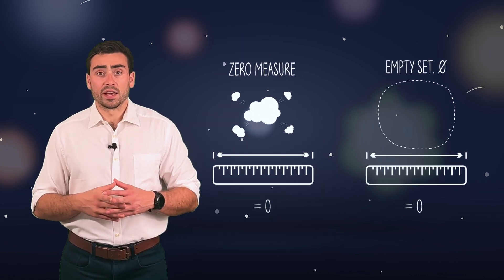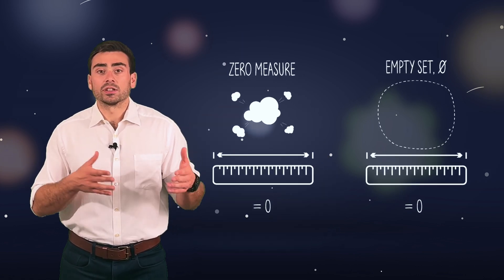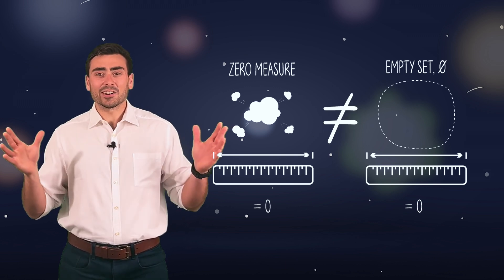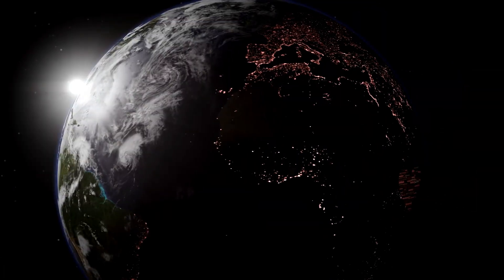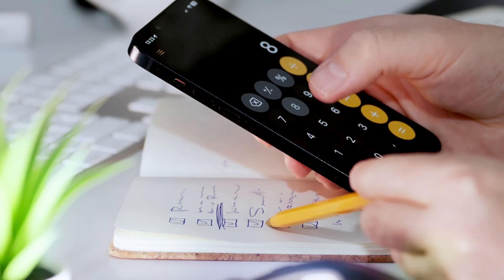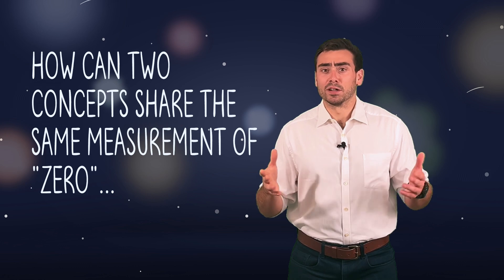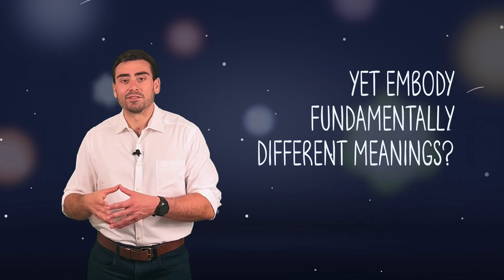This brings us to a fascinating paradox. When measured with a ruler, both zero measure and emptiness yield a value of zero. Yet they represent entirely different realities. Zero measure refers to something that exists but cannot be quantified by our tools — an entity with presence but no measurable size. Emptiness, on the other hand, signifies the complete absence of existence, the void where nothing is present at all. So how can two concepts share the same measurement of zero, yet embody fundamentally different meanings?